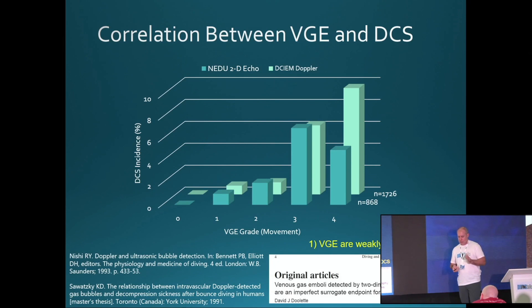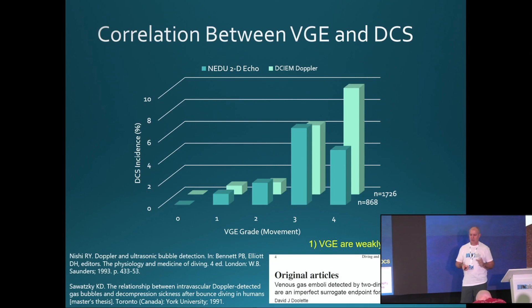VGE are prognostic for decompression sickness - high grade VGE means a high risk - but it's not perfect and it doesn't mean much for an individual. Even if you have the highest grade bubbles, only five to ten percent of people go on to get decompression sickness. So ninety to ninety-five percent of the time you're perfectly fine with that sort of bubble load, but there is a relationship there.